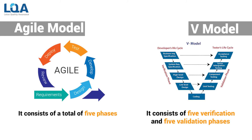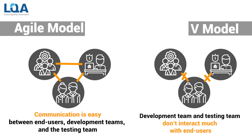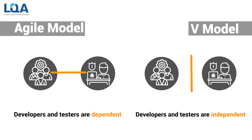VUI model consists of five verification and five validation phases. Communication is easy between end users, development teams, and the testing team in the Azure model. The development team and testing team don't interact much with end users in the VUI model. Developers and testers are dependent on each other in the Azure model, whereas developers and testers are independent in the VUI model.